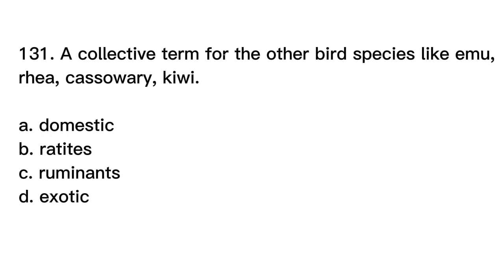Number 131. A collective term for the other bird species like emu, rea, cassowary, kiwi. A. Domestic. B. Radites. C. Ruminants. D. Exotic. Correct answer is letter B. Radites.